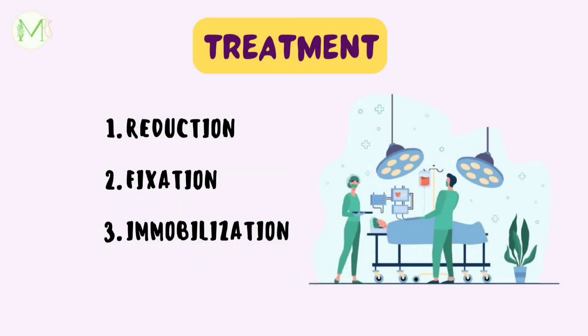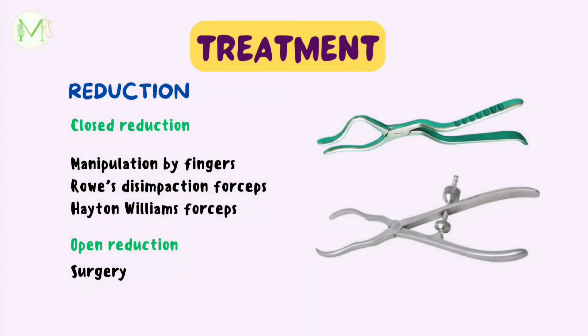Le Fort fractures are treated following the same basic principles of fracture treatment, which includes reduction, fixation, and immobilization. Reduction refers to restoration of the fractured fragments to the original anatomical position for re-establishment of form, function, and occlusion. It can be of two types: closed reduction and open reduction. Closed reduction refers to alignment of the fractured fragment without visualization of the fracture line, meaning no surgical intervention is needed. If simple, reduction can be done by fingers; Rowe's disimpaction forceps is used in case of impacted fractures, and Hayton-Williams forceps is also used in these cases.